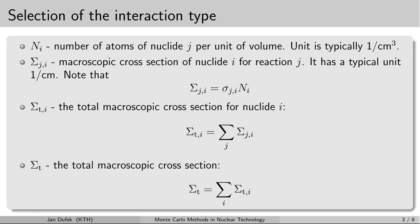We also need the macroscopic cross-section for a specific nuclide and specific reaction. Again we use the index i for the nuclide type and index j for the reaction type. The macroscopic cross-section is defined as the product of the microscopic cross-section for the corresponding nuclide and reaction, and the concentration of that nuclide. Its unit is 1 over unit distance, typically 1 over centimeter.